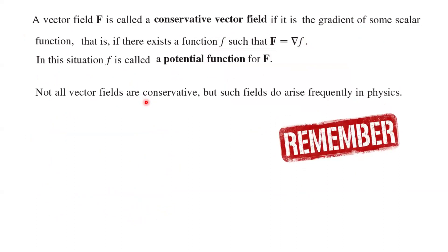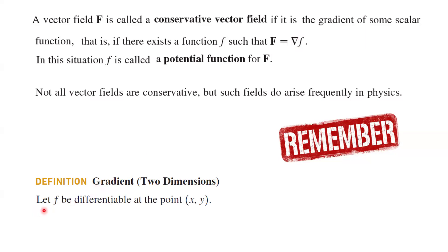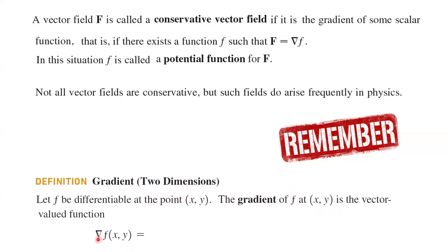We also reviewed the definition of the gradient. When you form the gradient of a function, you basically form a vector function. Let f be a differentiable function at point (x, y). Then the gradient of this scalar function at (x, y) is a vector-valued function — the gradient of f, or nabla f — where the first component is the partial derivative of f with respect to x, and the second component is the partial derivative of f with respect to y.